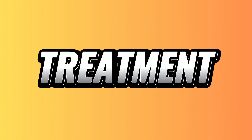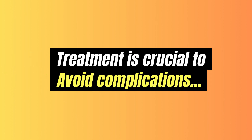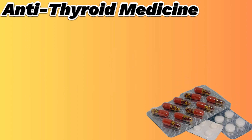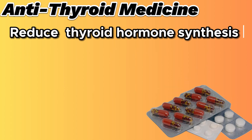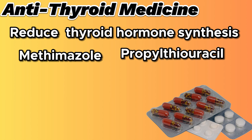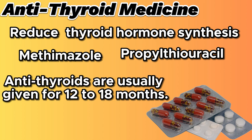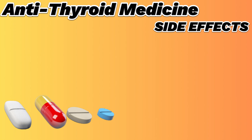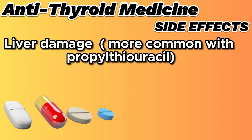Now let's discuss treatment options for hyperthyroidism. Anti-thyroid medications reduce thyroid hormone synthesis and include methimazole and propylthiouracil. Symptoms usually improve within several weeks to months, and anti-thyroid drugs are usually given for 12 to 18 months. Although rare, serious liver damage can occur with both medications, more commonly with propylthiouracil.